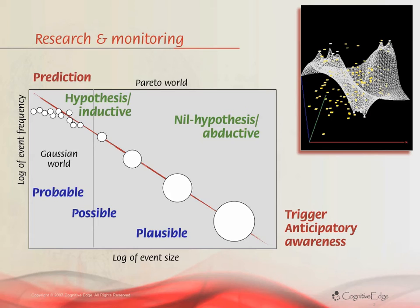The yellow dots represent anomalies — things we probably need to pay attention to. You see here the decision-maker is in direct contact with the raw data, a process called disintermediation.